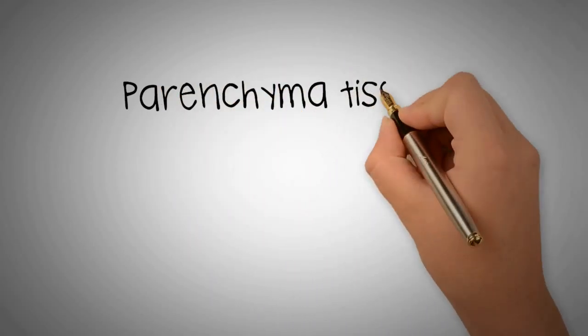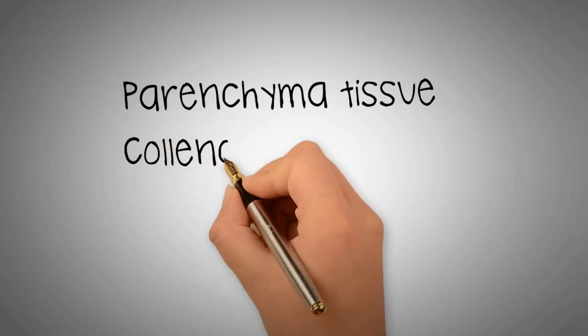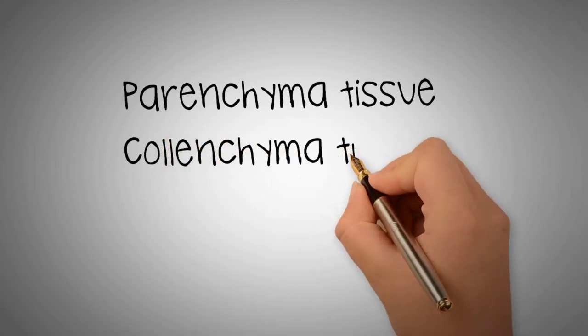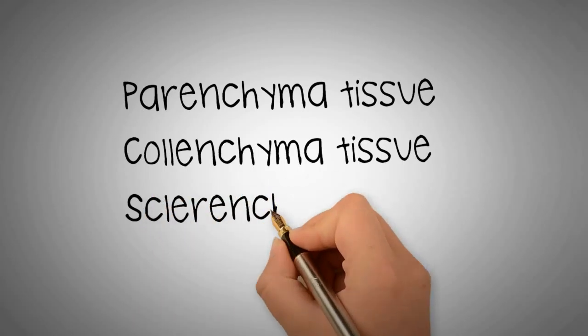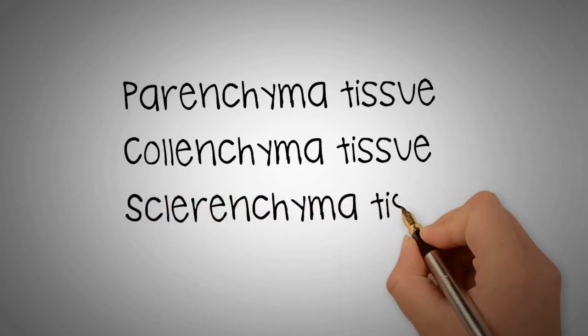Parenchyma, which is used for photosynthesis, food storage, healing, and tissue generation. Collenchyma, which is used for flexible support in growing roots, stems, and petioles. And sclerenchyma, which is used for rigid support with secondary cell walls.